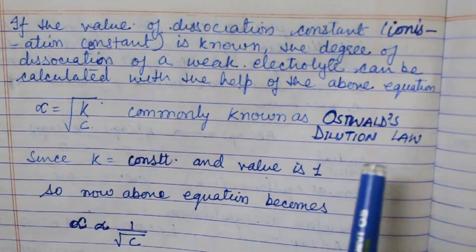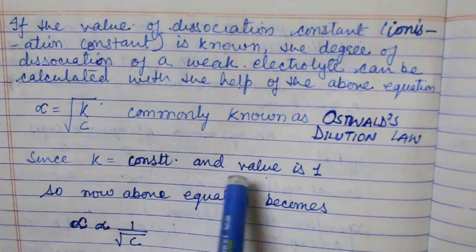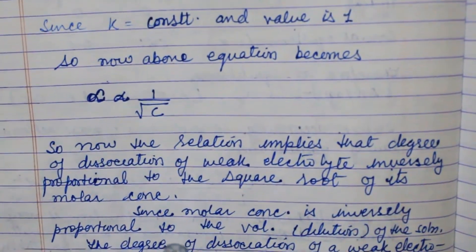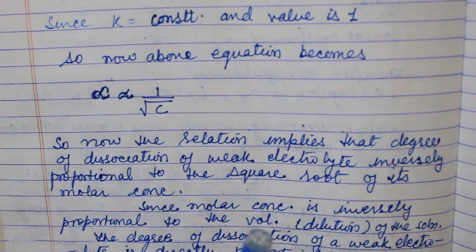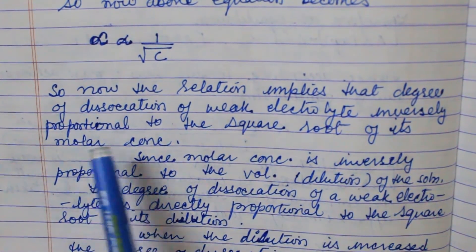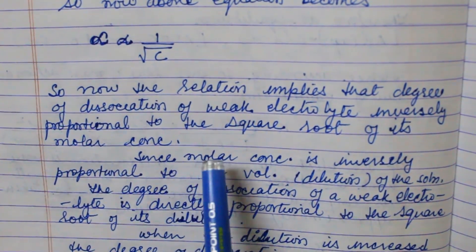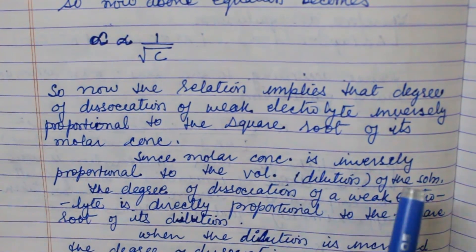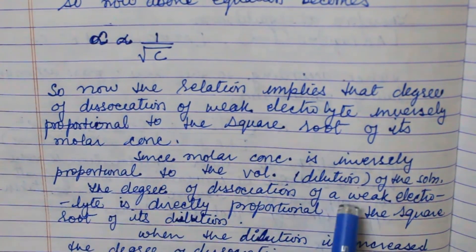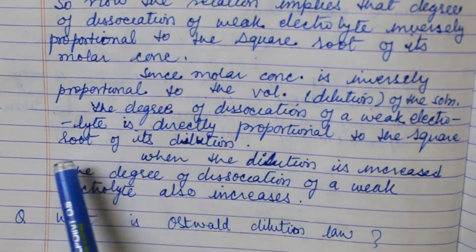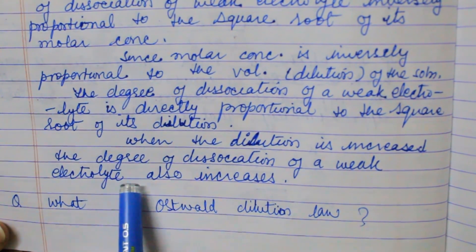This formula is known as Ostwald's dilution law because it was given by Ostwald. Since Ka is a constant, alpha is proportional to 1 over the square root of C. This implies the degree of dissociation of a weak electrolyte is inversely proportional to the square root of its molar concentration. Since molar concentration is inversely proportional to the volume, the degree of dissociation is directly proportional to the square root of dilution. When dilution is increased, the degree of dissociation of the weak electrolyte also increases.